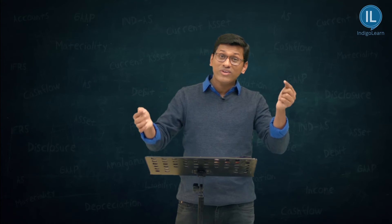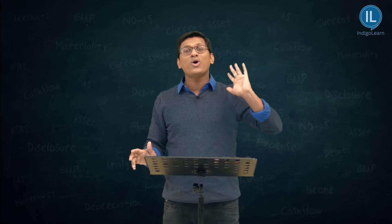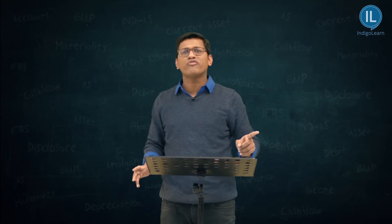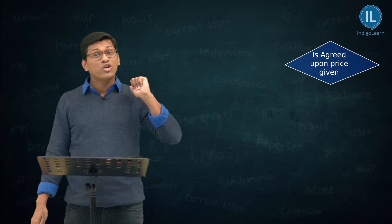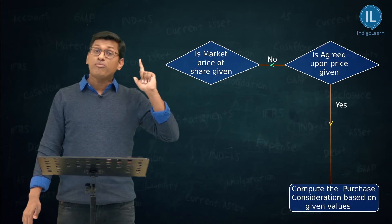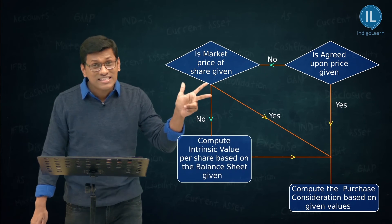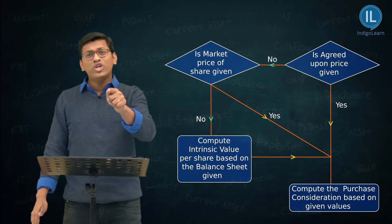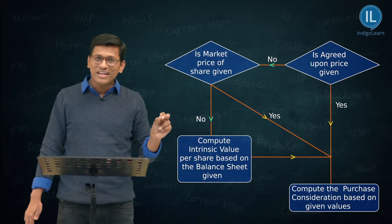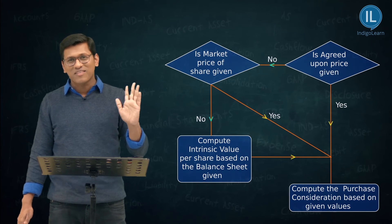You do this internal-external calculation only when the first two methods are not available. To recap: first, look for agreed upon price. If not available, look at market price. If market price is not available, compute intrinsic value per share. To compute intrinsic value, you compulsorily need the balance sheet — without it, you cannot calculate intrinsic value.